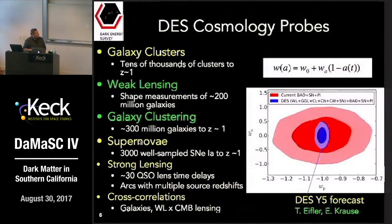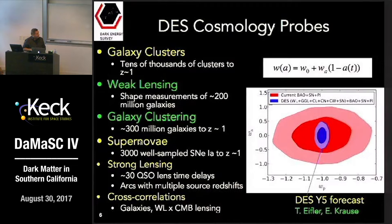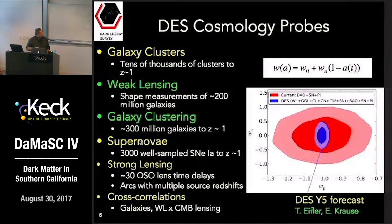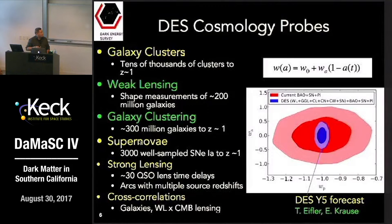The probes used to constrain cosmology from the Dark Energy Survey are galaxy clusters, weak lensing, galaxy clustering, and supernovae. We have a strong lensing component and we're looking into cross-correlations of galaxies with CMB lensing and also weak lensing with CMB lensing. This talk is going to be mainly on the combination of weak lensing, galaxy clustering, and the cross-correlation thereof — galaxy-galaxy lensing — which is our multi-probe analysis for constraining cosmology.